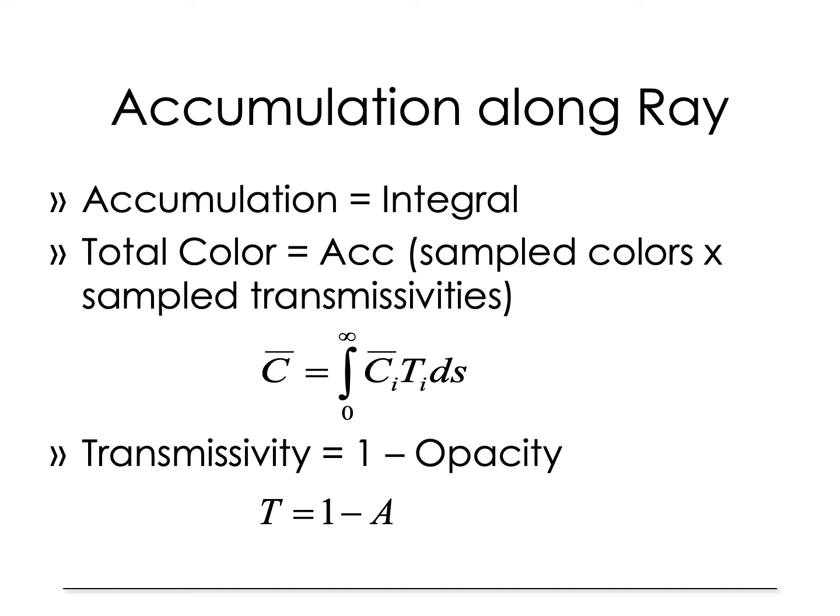The accumulation of the color is essentially an integral. The total accumulated color depends on the sampled colors along the ray together with the transmittivities or the opacity at each of those points. Both the color and the transmittivity are determined by a transfer function that maps every scalar value to a color and a transmittivity. Given these values, C sub i and T sub i, the total color is essentially an integral over the ray of C sub i multiplied by T sub i. The transmittivity T sub i is just 1 minus opacity.